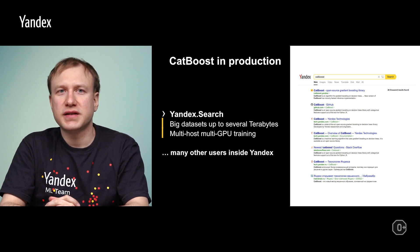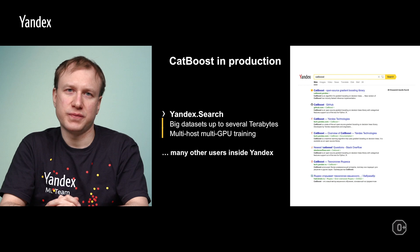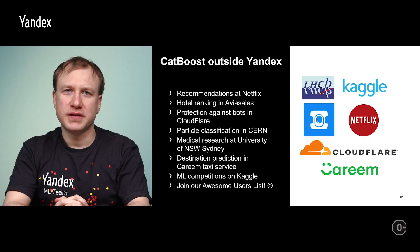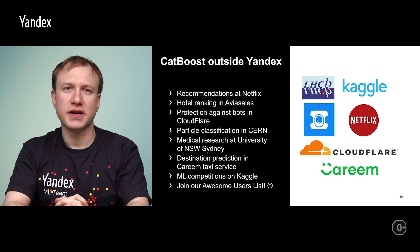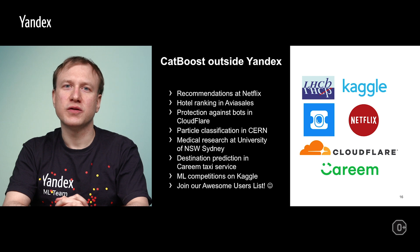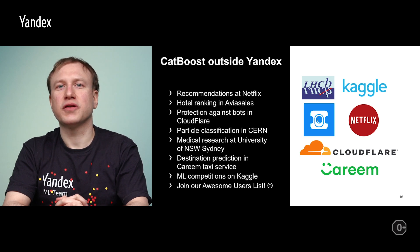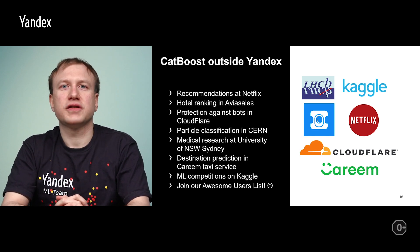Data is very big at Yandex — datasets can reach up to 30 terabytes, so multi-host and multi-GPU training is used. Let me show you some use cases of CatBoost outside of Yandex. The first big example is Netflix, which uses a CatBoost model as part of its recommendation system. Another example is ranking hotel offerings for a large airline ticket booking system. In Cloudflare, CatBoost is used to detect bot login attempts and protect against them. CatBoost was also part of CERN particle classification, classifying particles such as muons and protons. CatBoost is also used in ML contests on Kaggle, though this is not an exhaustive listing.